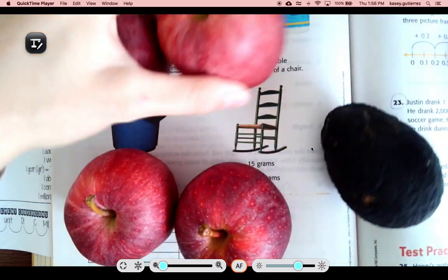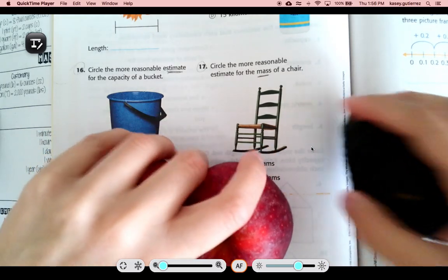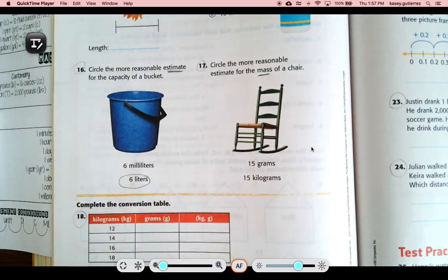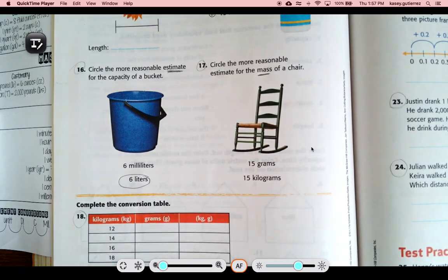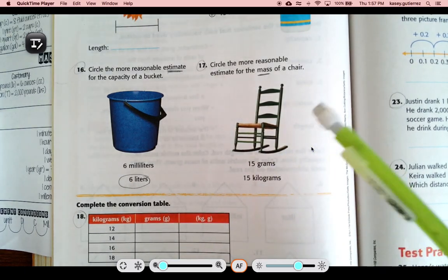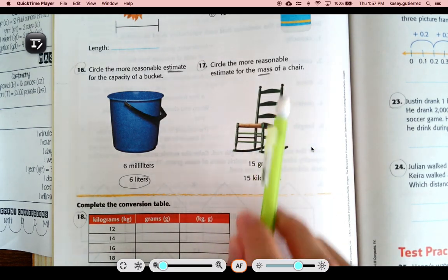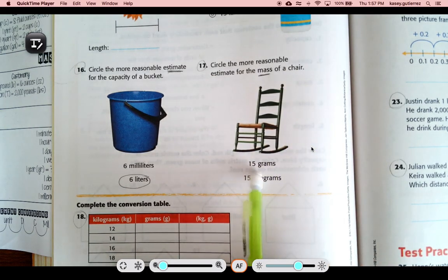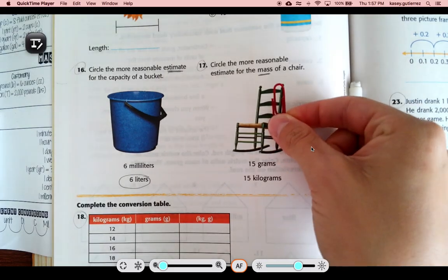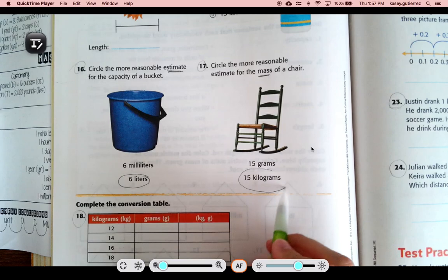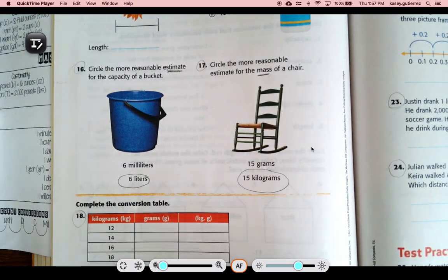So 1 kilogram is 6 items like this, or 5 apples and an avocado, and 1 gram is a paper clip. So now that we remember that the mass is measured in grams, let's take a look. Is this rocking chair about 15 grams or 15 paper clips? No way. It's got to be 15 kilograms.